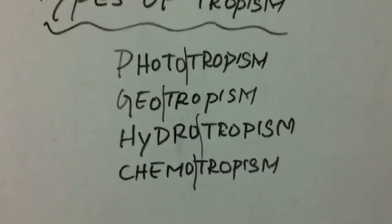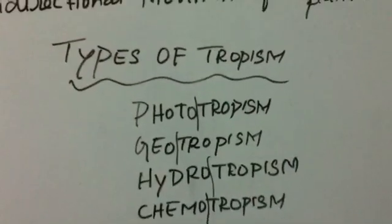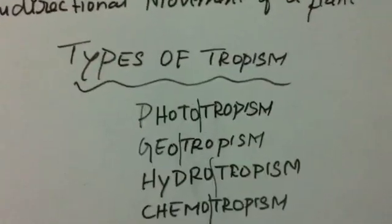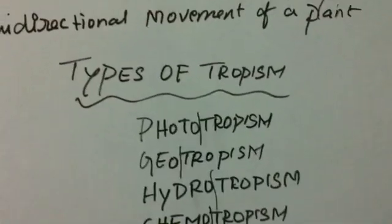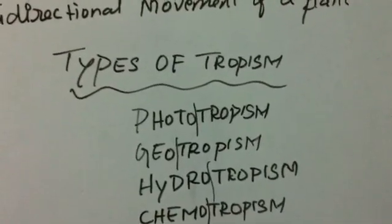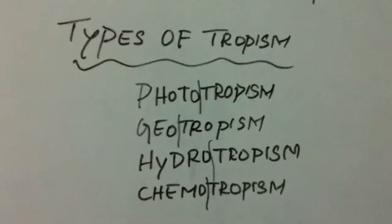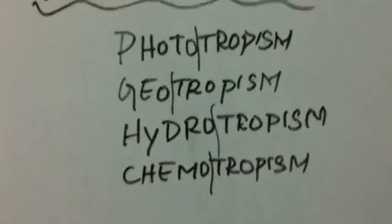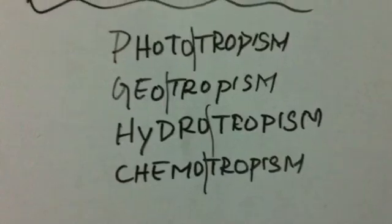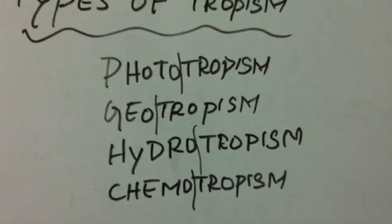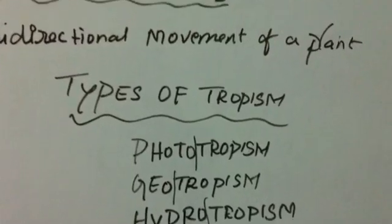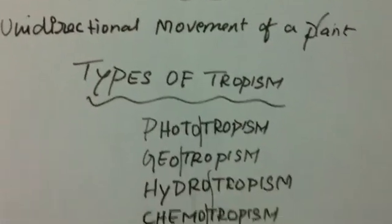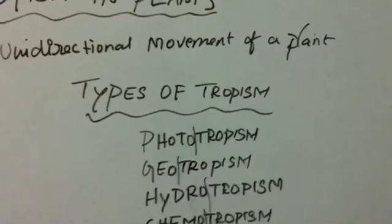The next type is chemotropism. Chemotropism is the movement of a part of a plant in response to chemicals. Some plants move due to chemical reactions. An example is the growth of a pollen tube in response to the presence of sugar on the stigma.